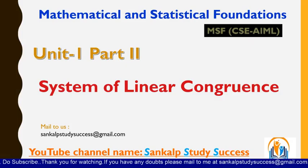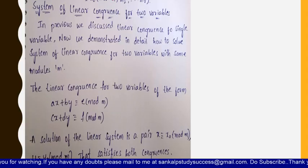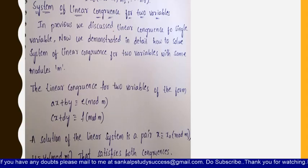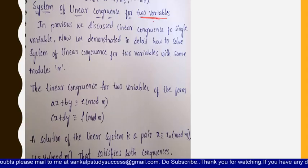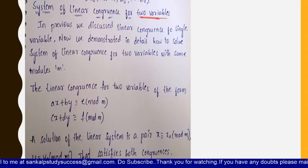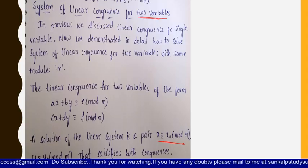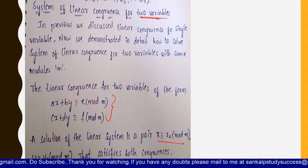Welcome back to our channel Sankalp Study Success. In this video we are going to study about the last topic of our first unit, which is system of linear congruences. Here we'll see the system of linear congruences for two variables. In previous lectures we discussed linear congruences of a single variable; now we are going to discuss linear congruences of two variables. These are of the form ax + by ≡ e (mod m) and cx + dy ≡ f (mod m), where the solution will be x ≡ x₀ (mod m).